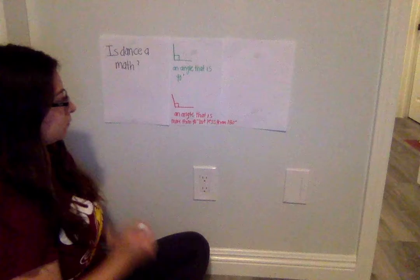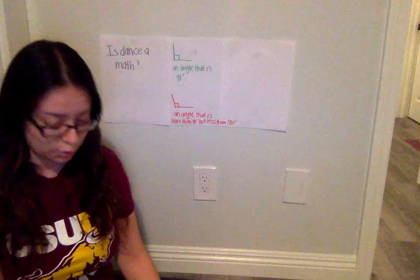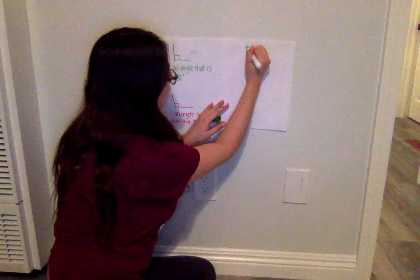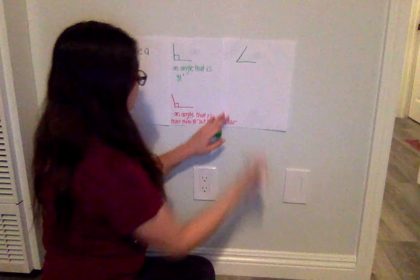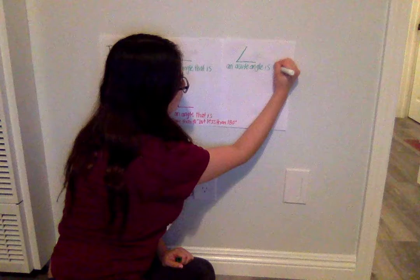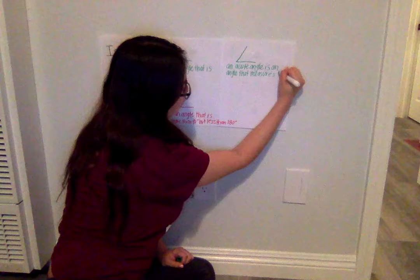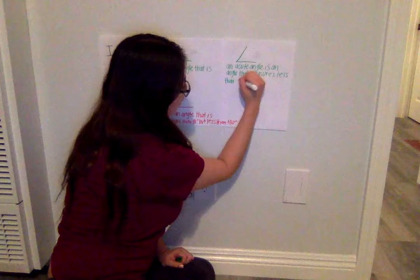For our third angle, we are going to be talking about an acute angle. An acute angle is an angle that looks like this. The definition for an acute angle is an angle that is less than 90 degrees.